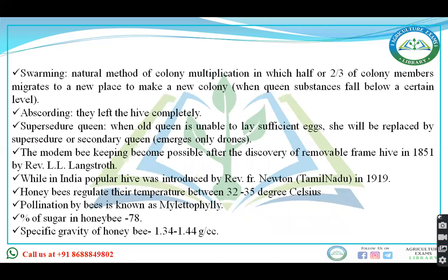To review: swarming reduces overcrowding in the hives, and absconding is when the entire colony leaves. Next is supersedure of queen. Suppose the old queen is unable to lay sufficient eggs — then she will be replaced by another queen that emerges, possibly from a drone cell. That is a supersedure queen.